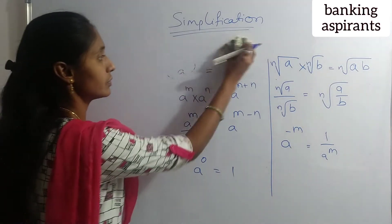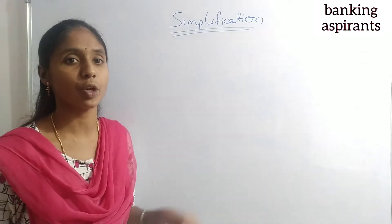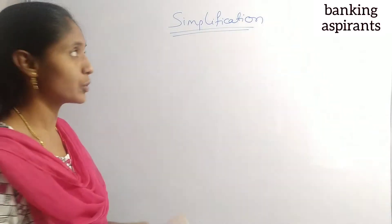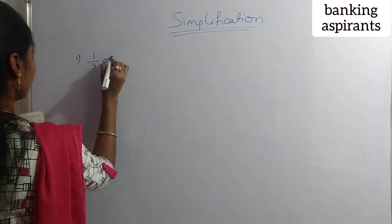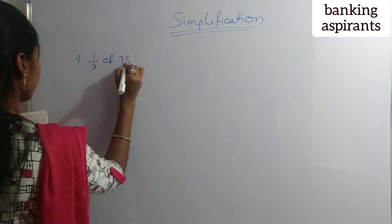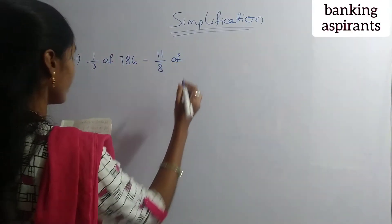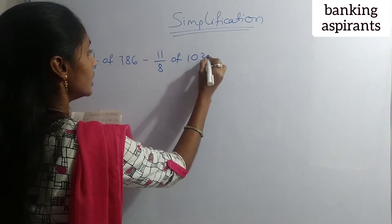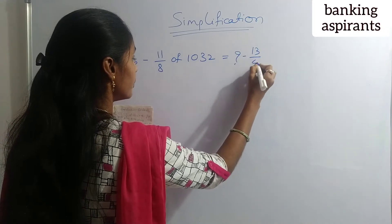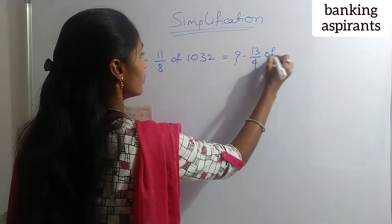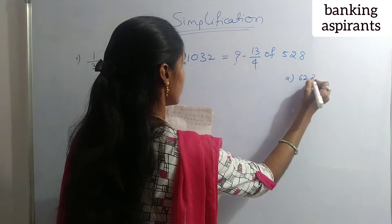Let me see the examples. This simplification is useful to solve any upcoming topics. First question: 1/3 of 786 minus 11/8 of 1032 equals question mark minus 13/4 of 528. Options are: A) 623, B) 581.